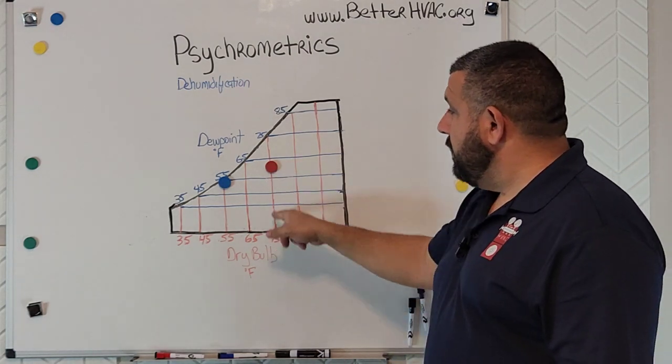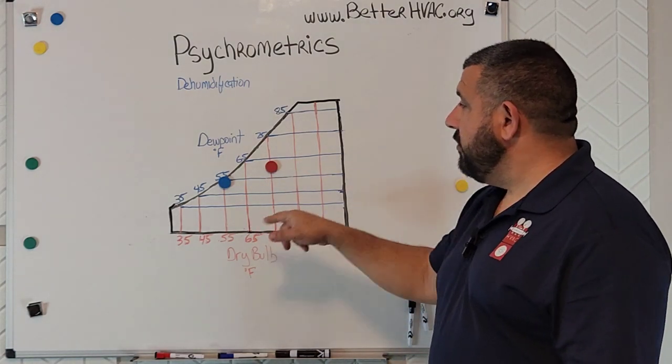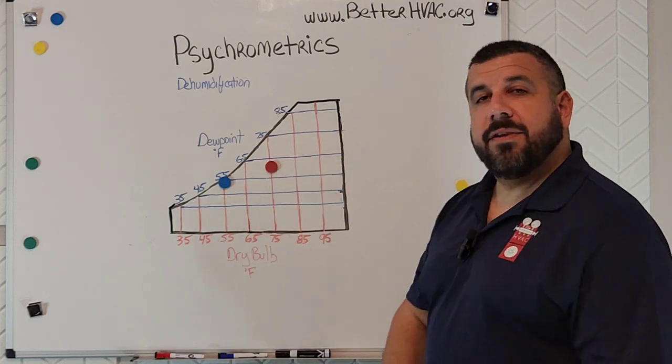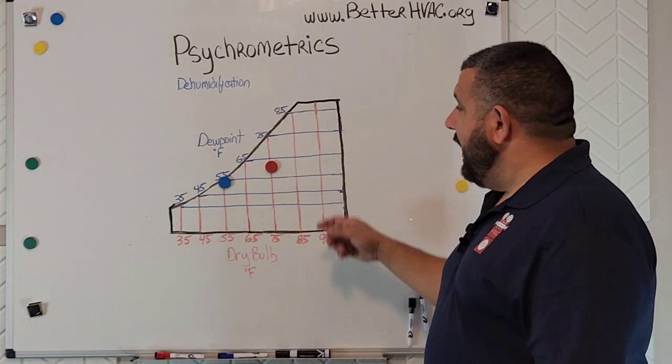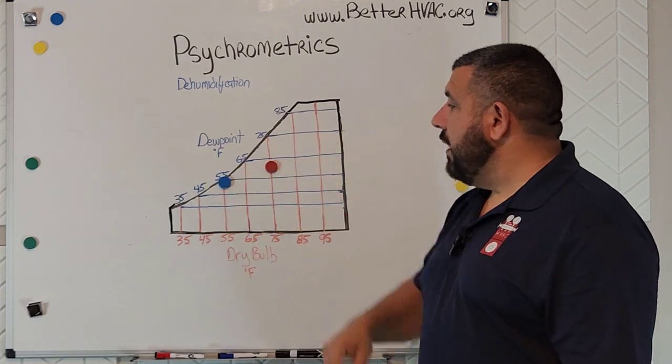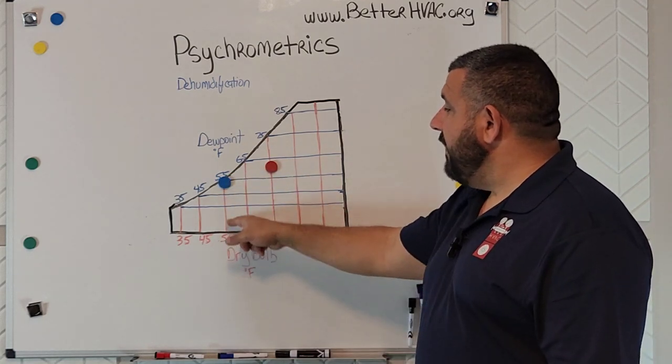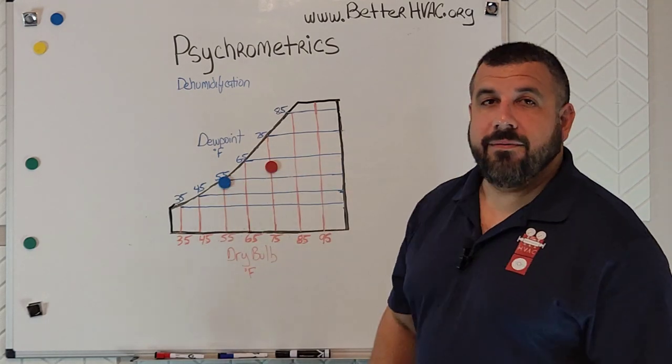So say, for example here, this is our typical return air temperature: 75 degree dry bulb, somewhere around a 60 degree dew point. And the air coming out, our supply air temperature, is around 55 degree dry bulb and 55 degree dew point.